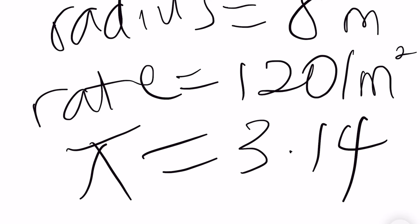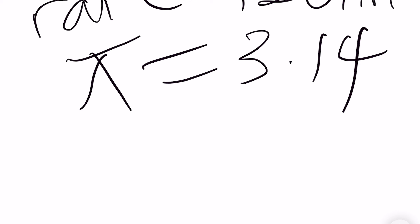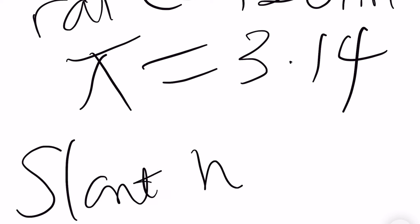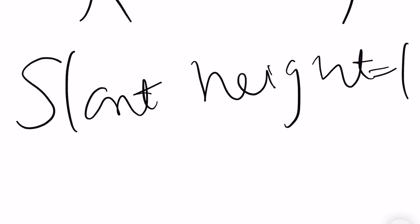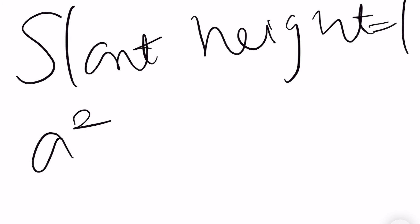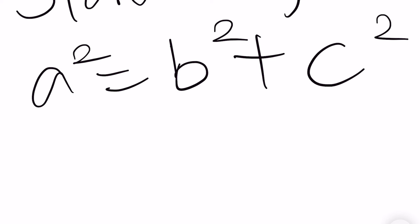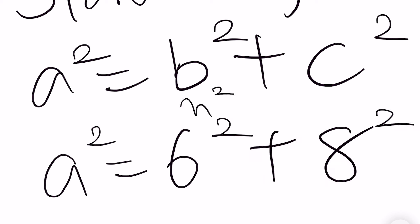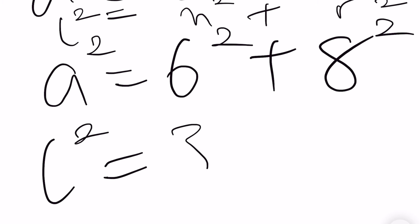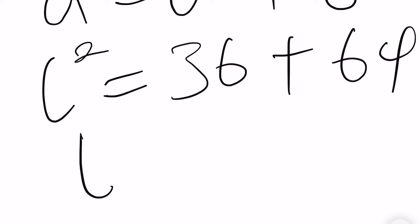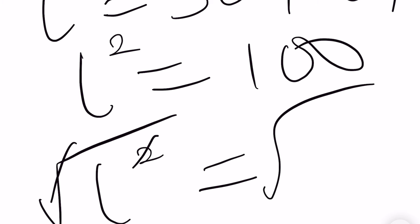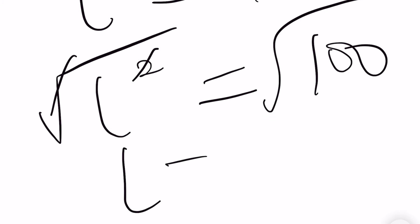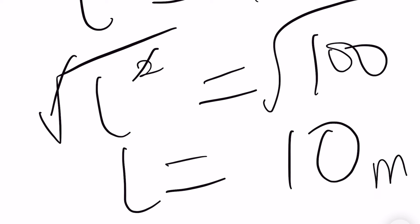Now, we first find the slant height L. By using Pythagoras' theorem, we have L squared equal to H squared plus R squared. So we have L squared equal to 6 squared plus 8 squared, which is 36 plus 64, giving us L squared equal to 100. Taking the square root, our L equals 10 meters. So our slant height is 10 meters.